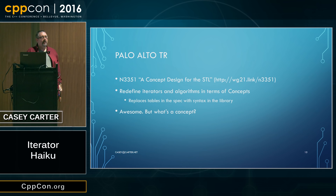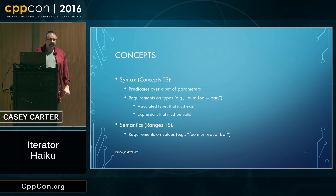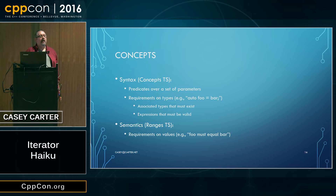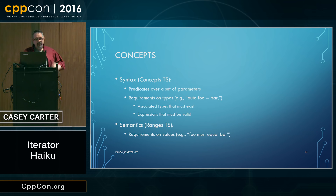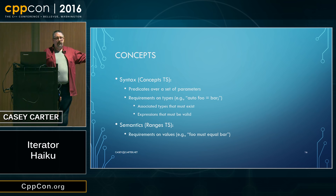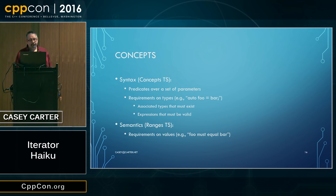A concept is a predicate over some set of parameters — a set of requirements applied to those parameters that they're expected to satisfy. If the parameters satisfy those requirements, they satisfy the concept. Syntactic requirements as applied by the concepts TS are requirements on types. For example, 'auto foo = bar' is the kind of syntactic thing the concepts TS can validate — it can validate that it's possible to take a bar of some type T and make a copy of it with copy syntax.